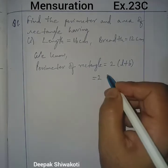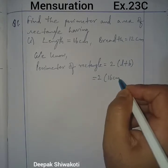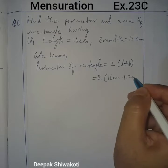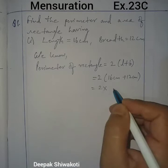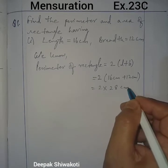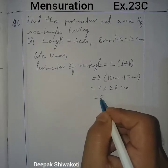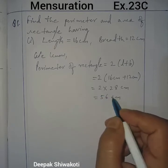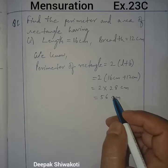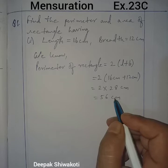Length is 16 centimeter and breadth is 12 centimeter. So 2 into 28 centimeter equals 56 centimeter. We got 56 centimeter as the perimeter of the rectangle.